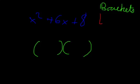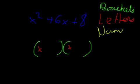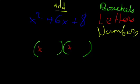Then we have letters. So our letters are x and x because we have an x squared. Then the next step is we have to find our numbers. Now, what we need to do is we need to find numbers that add to this and multiply to make this.